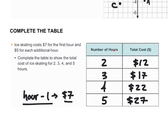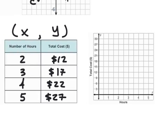We're comparing two things: number of hours and total cost. Think of this like your point — number of hours is the x-coordinate and cost is the y-coordinate. X is always in the left column and Y in the right column. X is number of hours, Y is total cost. On the graph, the label for hours is on the x-axis and total cost is labeled on the y-axis.